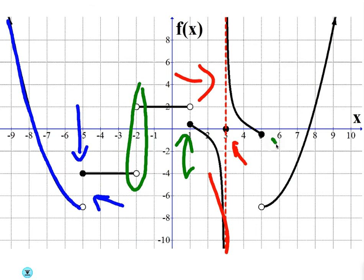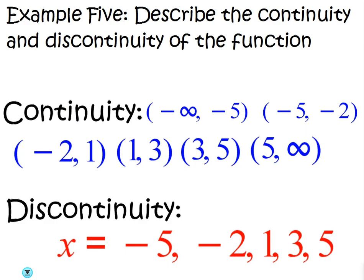Then finally, we have another jump, jumps down to here. So I'll go ahead and leave this to you to copy down. Basically, it's continuous everywhere except those discontinuity points we just mentioned.